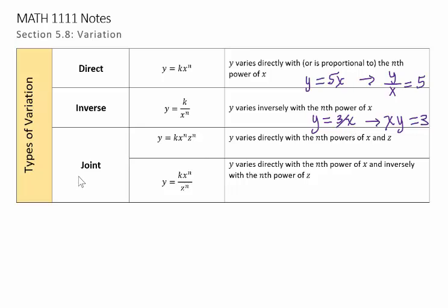The third type is a combination of direct and inverse, and it's called joint variation. It's of the form y equals k times x to the n times z to the n, where y is said to vary directly with the nth powers of x and z.